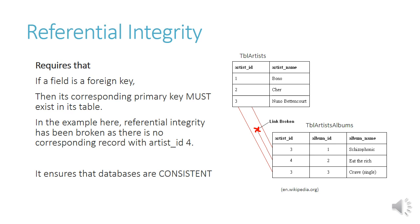Let's have a look at the example. We've got table artists with the artist ID and artist name, and table artists albums with artist ID, album ID, and album name. It shows you which albums each of these artists has created. Now referential integrity in our example has been broken because there is no corresponding record with artist ID 4.